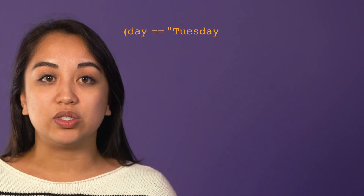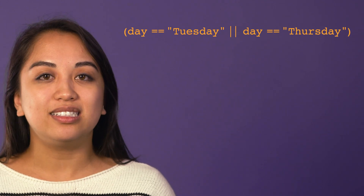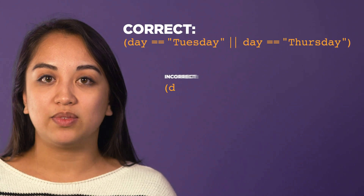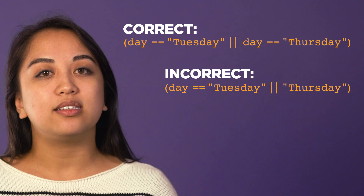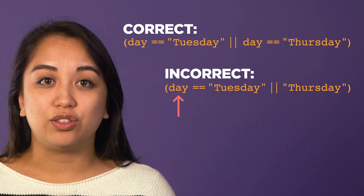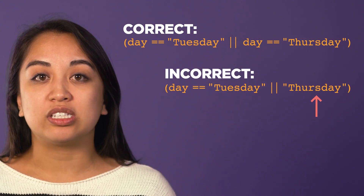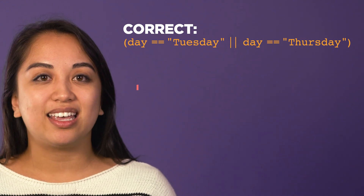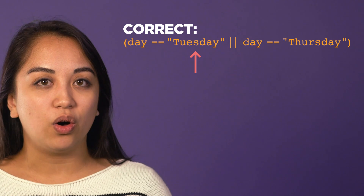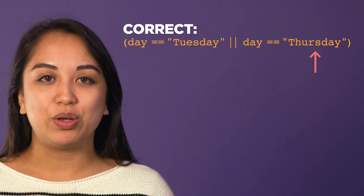Many beginner programmers make a mistake while trying to write this expression: is the day Tuesday or Thursday? Notice the subtle difference between the correct code and this version. This is often the result of the fact that in English we would say, "Is the day Tuesday or Thursday?" However, remember that computer questions are different, so we have to ask, "Is the day equal to Tuesday? Or is the day equal to Thursday?" so that the computer will understand.